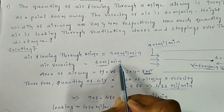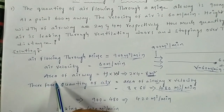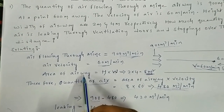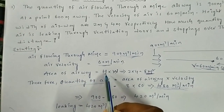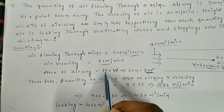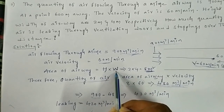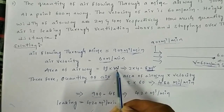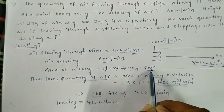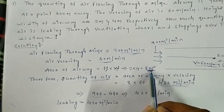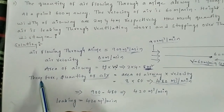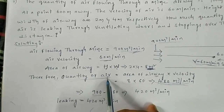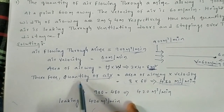In the solution, we calculate the area of the airway. The area of the airway is calculated by multiplying the height and width of the gallery: 2 meters × 4 meters = 8 square meters.